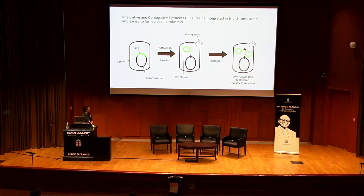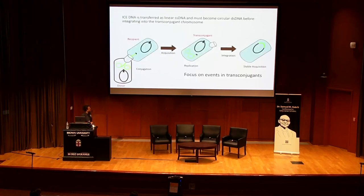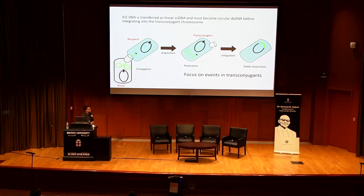When activated, the element excises from the chromosome and exists as an ICE plasmid. In this state, it's transfer-competent as it expresses those genes required for replication along with mating. ICE DNA transfers as linear, single-stranded DNA through the conjugation machinery into the recipient. A recipient undergoes phenotypic conversion into a transconjugant when that linear, single-stranded ICE DNA is reconstituted as ICE plasmid, which is suitable substrate for integration into the chromosome. This usually occurs via site-specific recombination, and stable acquisition occurs when the element integrates into the chromosome of its host.